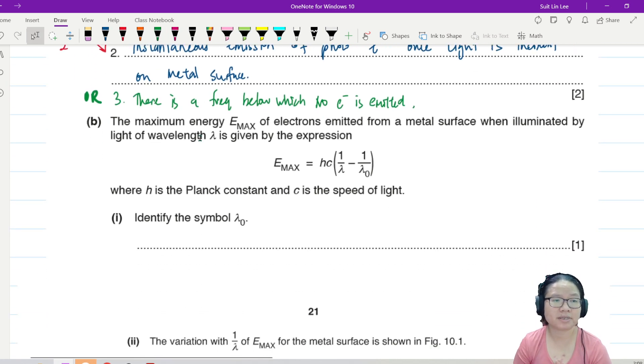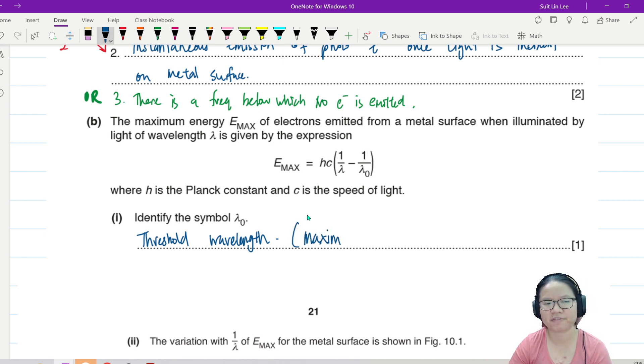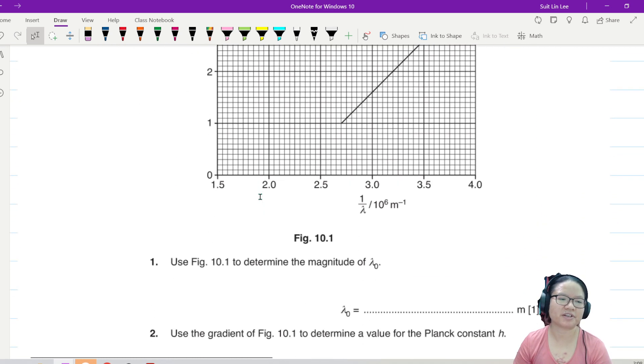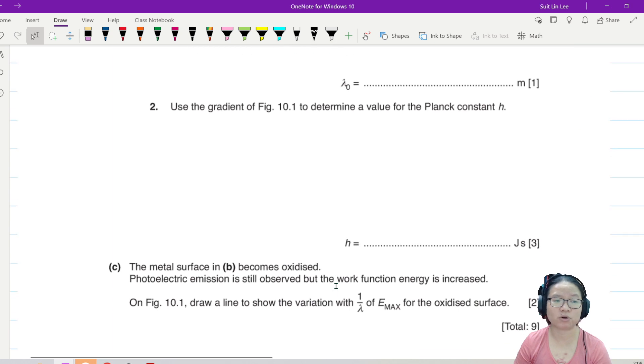Part B. The maximum energy E_max of electrons emitted from a metal surface when illuminated by light of wavelength lambda is given by this expression. Identify the symbol lambda naught. So whenever you see a naught or a zero underneath, this is known as the threshold value. So this is the threshold wavelength. Or if you fancy, you can actually define threshold wavelength: the maximum wavelength for emission of photoelectrons, above which no electrons is emitted. The maximum allowed or the maximum possible wavelength. And then they gave you a beautiful graph like this, and they asked you from the graph to determine the magnitude of lambda naught and also use the gradient to determine the Planck constant.